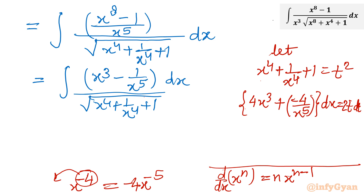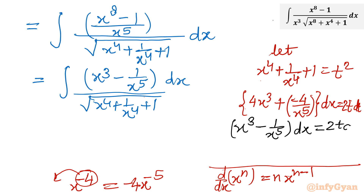Now I will divide this equation by 4. So once we divide both sides by 4, we have (x^3 - 1/x^5) dx equal to 2t dt divided by 4, which ultimately gives us t dt over 2, or (t/2) dt.